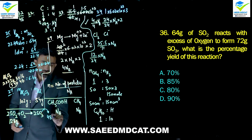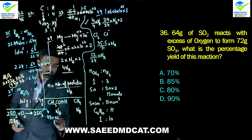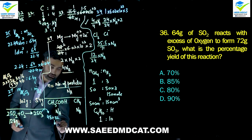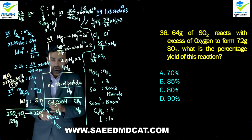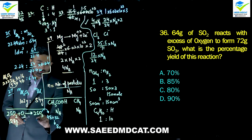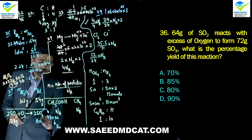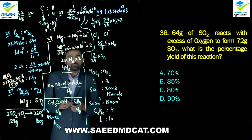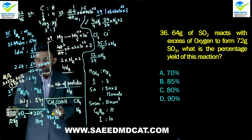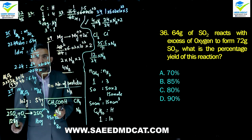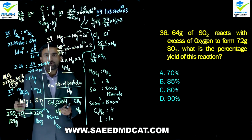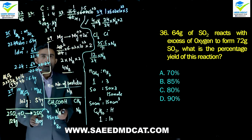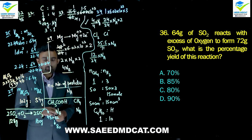Molar mass of SO3 = 32 + 3(16) = 80 g/mol. From balanced equation: 2SO2 (128 g) → 2SO3 (160 g). So 64 g SO2 should theoretically produce 80 g SO3.